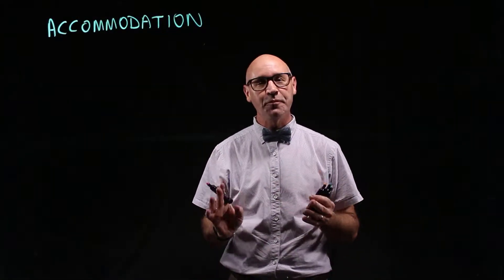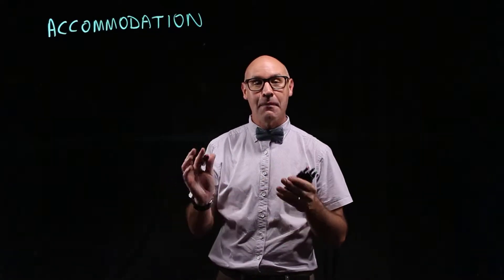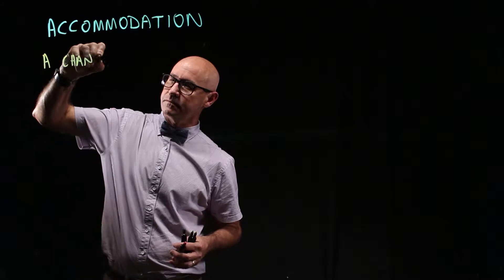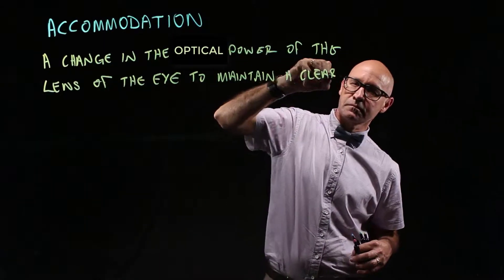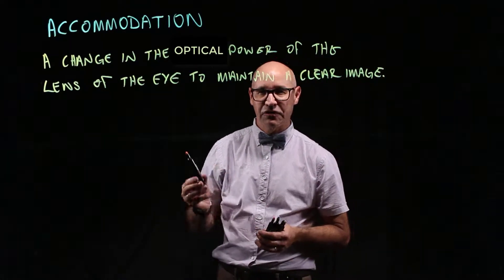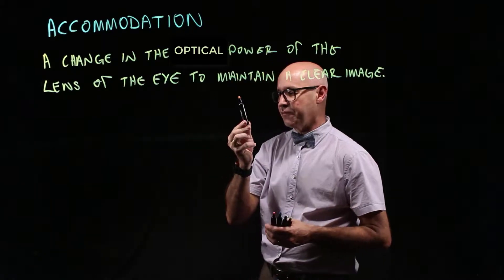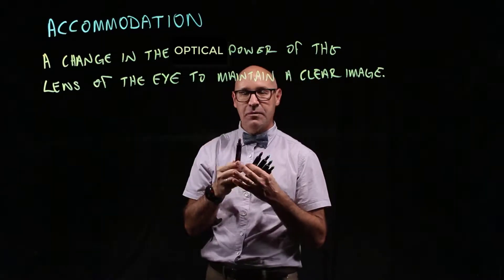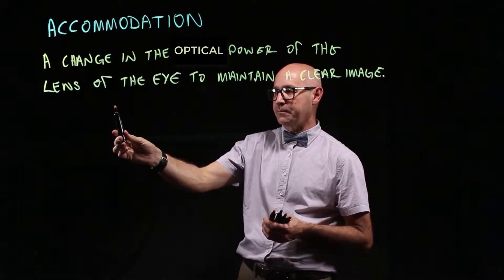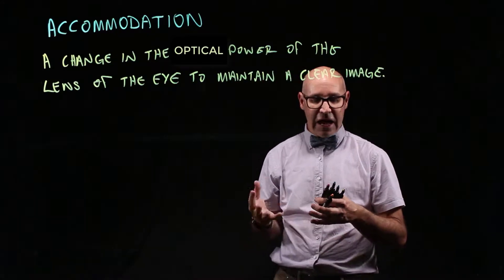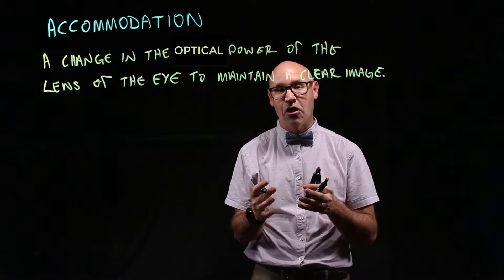Accommodation is a change in the optical power of the lens of the eye to maintain a clear image. When you look at something that's close and something that's far away, you're able to change the focus of your eyes to keep the image in focus. That's the process of accommodation, and it occurs by changing the thickness of the lens of the eye.